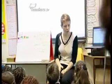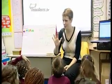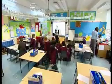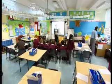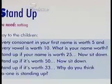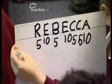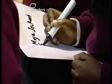It covers from Year One up to Year Three, with a real range of ability. The activity used today was called Stand Up: children find a value for their name — ten points for a vowel or five points for a consonant — then add them up to see who has the most valuable name.